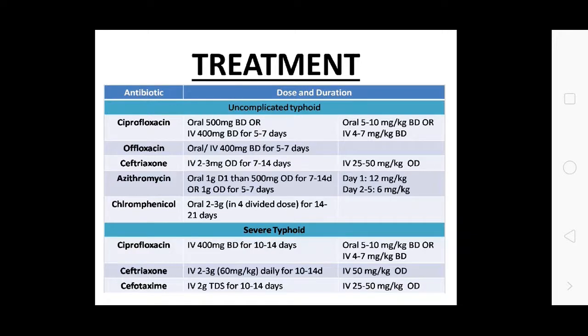For uncomplicated typhoid fever, oral Ciprofloxacin, Ofloxacin, Ceftriaxone, Azithromycin, or Chloramphenicol are given. For severe typhoid fever, injectable Ciprofloxacin, Ceftriaxone, or Cefotaxime are used as injection doses, with drug and dose selected according to the patient's condition.